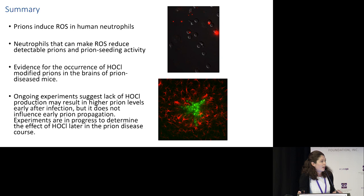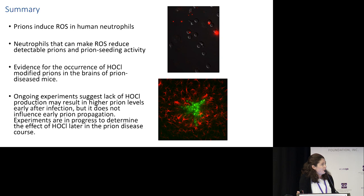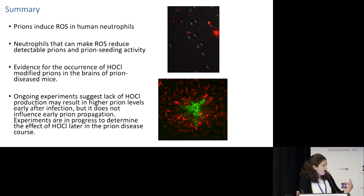In summary, what I've found thus far is that prions do activate human immune cells to produce these natural ROS disinfectants. The better these cells are at producing these disinfectants, the better they are at reducing other prions that they come into contact with. We think this process takes place in the body, where we see evidence for these modifications on prions in brain tissue, and experiments are ongoing in the mice.